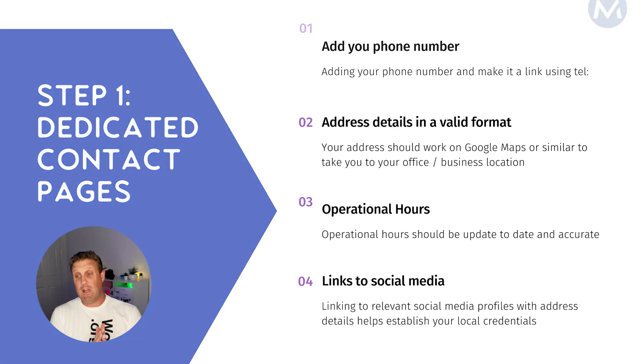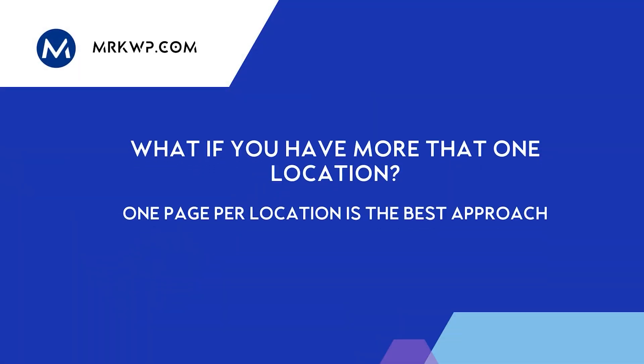Now if you have multiple locations — more than one location — you should have one page per location with its address, operating hours, and a phone number that reaches that location. If you have two or three locations in a state, or you serve states or regions, you can have region pages with those addresses, but it really is important to have dedicated landing pages so Google knows where to send people when they're searching for your location in their particular local area.